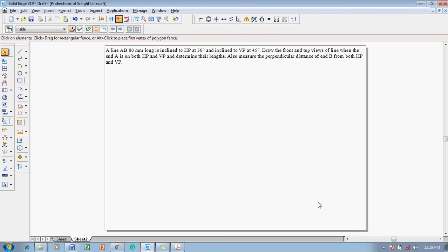According to the given question, first we must collect the data. The data collection will be like this: The true length is given as 80mm, that is A dash B1 dash and AB2 is 80mm, and the locus of A dash is on HP and the locus of A is on VP. If this problem is going to be seen, a similar kind of problem is already shown in one of my previous video lectures.